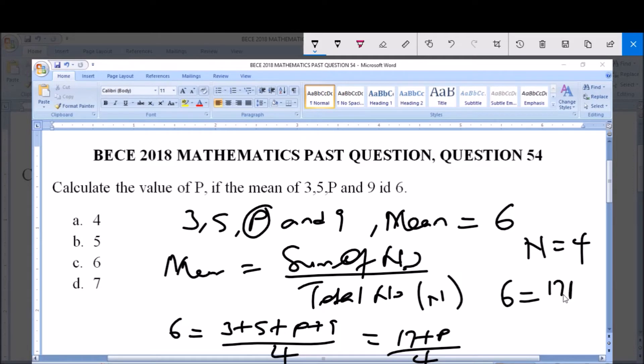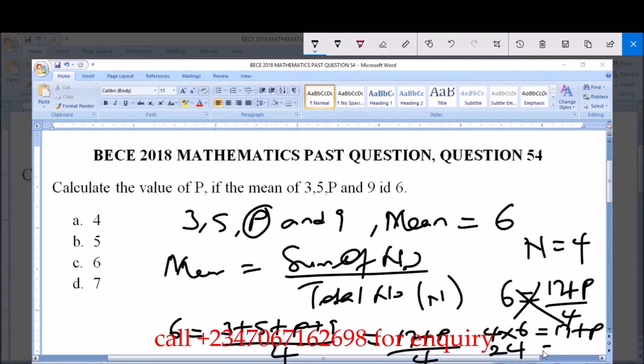Then we cross multiply. When you cross multiply, you have that 4 times 6 is equal to 17 plus P. 4 times 6 will give us 24, so 24 is equal to 17 plus P.